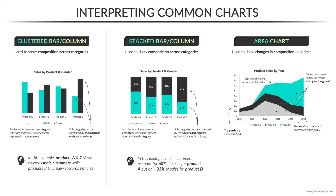Looking at this example, it can be helpful to focus on one segment at a time. Product A, in light gray, accounted for about half of all sales in 2020, before tapering off in the following years. Product B, in dark gray, grew slightly but remained pretty stable over time. And product C, in bright blue, appears to have launched in 2020 and grown each year, to the point where it now accounts for the majority of total sales in 2023. We're able to get a really clear picture of the product mix and how that composition has changed over time.